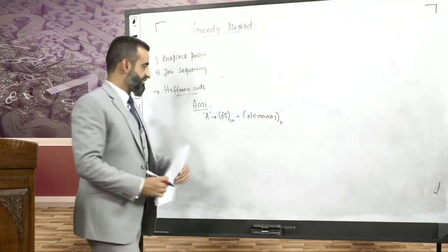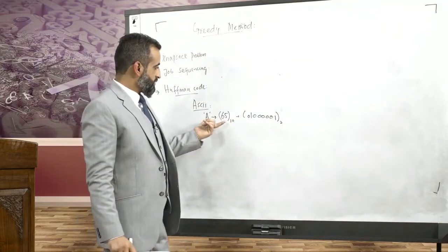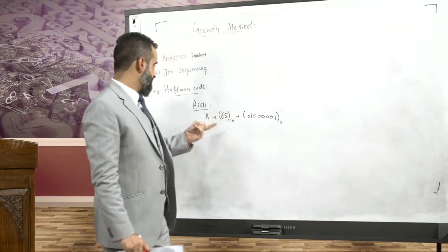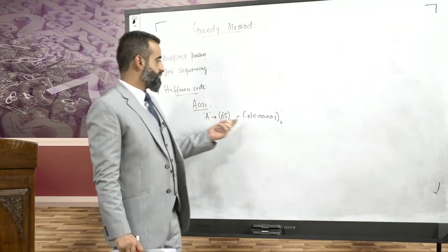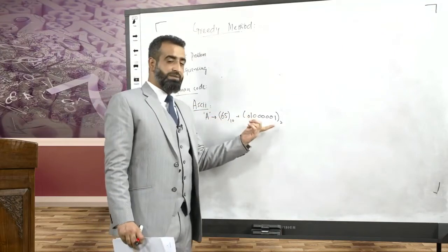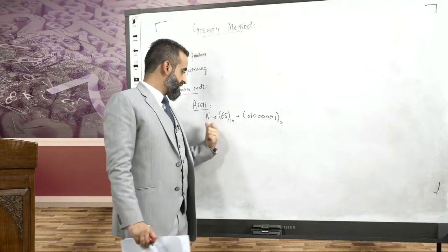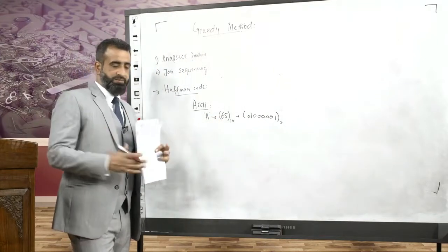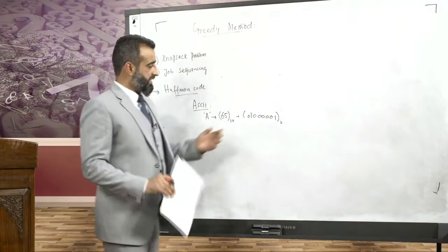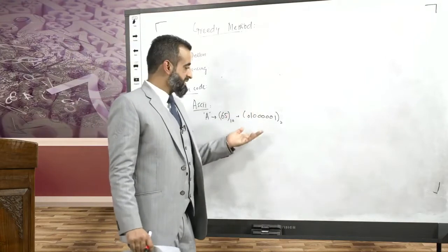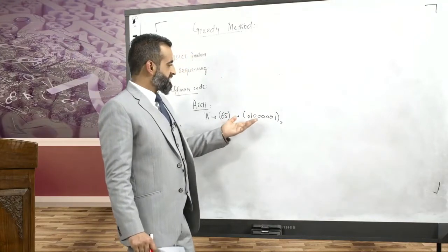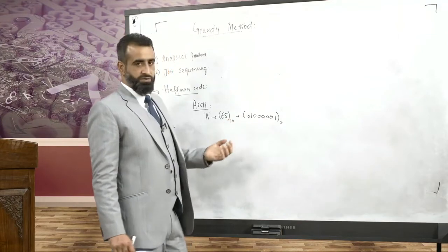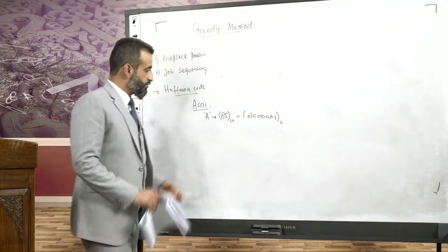This is a binary representation of capital A. Essentially, using these ASCII codes, we are making use of 8 bits to represent a single character. So if there is a message of 10 characters, we will be using somewhere around 80 bits.